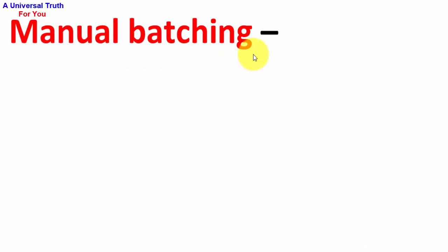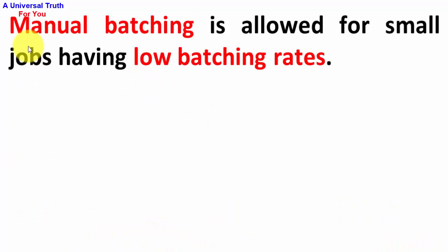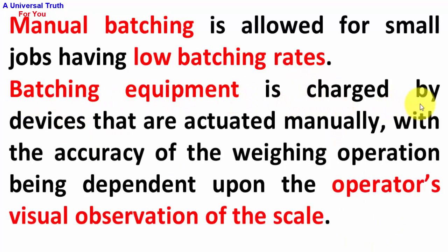Manual batching: in this type, all operations of weighing and batching of concrete materials are done manually. Manual batching is allowed for small jobs having low batching rates. Batching equipment is charged by devices that are actuated manually, with the accuracy of the weighing operations being dependent upon the operator's visual observations of the scale.